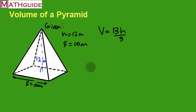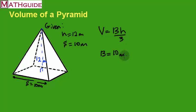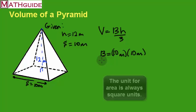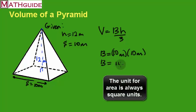If we're going to use the formula, we first have to figure out what's the area of the base. Since this is a square-based pyramid, it's going to be pretty simple — it's just side times side: 10 meters times 10 meters. The area of the base is 100 meters squared, because meters times meters is meters squared. Anytime we're dealing with an area, we're going to have square units.